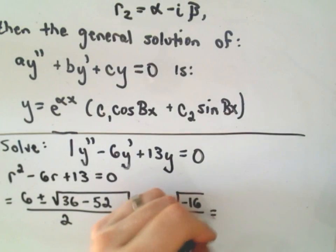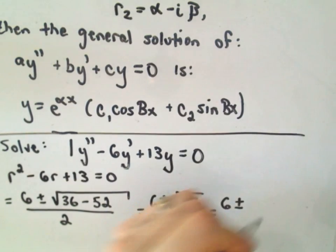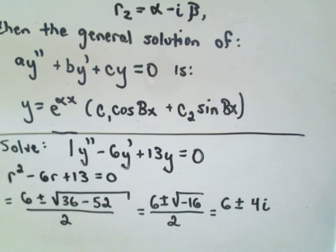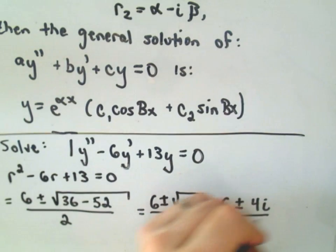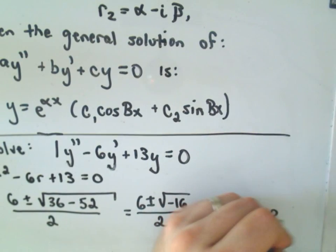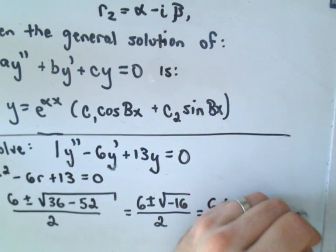We can write this as 6 ± 4i over 2. Let's go ahead and reduce this to 3 ± 2i.